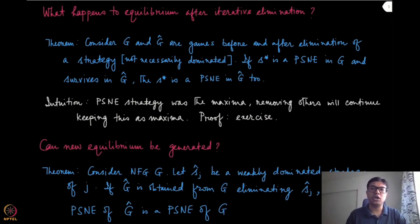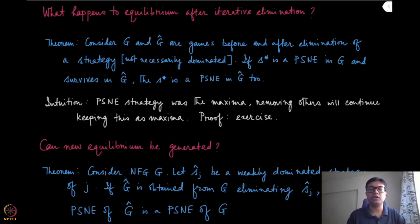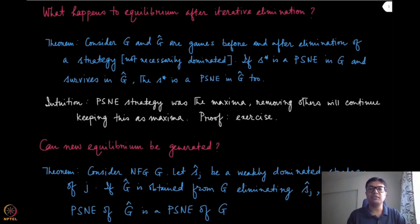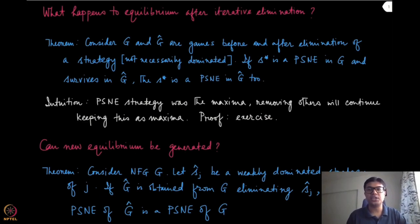What happens to the PSNE after you do an iterative elimination of dominated strategies? First, let us make one simple observation: even if you forget about domination — if you just remove one strategy for a specific player — then if the Nash equilibrium which was there in the original game continues to survive in the new reduced game, then that particular strategy profile will also be a Nash equilibrium in the reduced game. Because if you remove the strategy of player J, for all the players except player J nothing has changed.